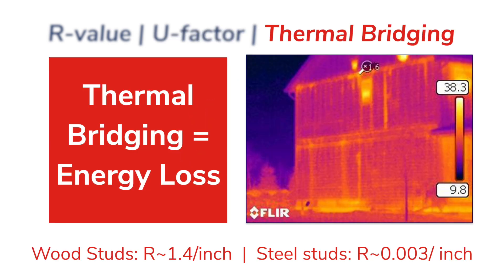Now on to the concept of thermal bridging. Wood and steel framing members that make up a building have low R-values, and steel is a highly conductive material. This is significant because heat always wants to travel along the path of least resistance, and materials with low R-values offer an excellent heat pathway for this. The movement of heat across materials more conductive than their surroundings is called thermal bridging.